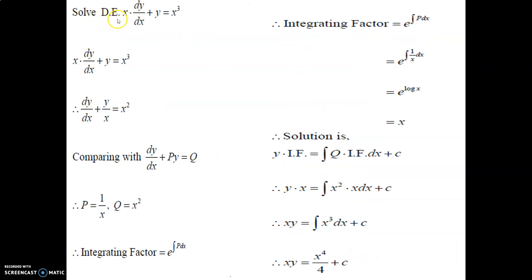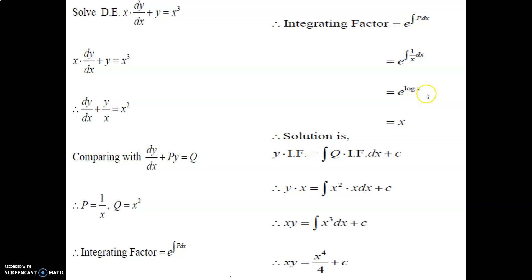Solve x·dy/dx + y = x³. Again x is a multiplier, so divide both sides by x: dy/dx + y/x = x². Comparing, p = 1/x and q = x². Integrating factor: IF = e^(∫(1/x)dx) = e^(log x) = x. Solution: y·x = ∫x·x² dx + c = ∫x³ dx + c. The integration of x³ is x⁴/4 + c, so xy = x⁴/4 + c.